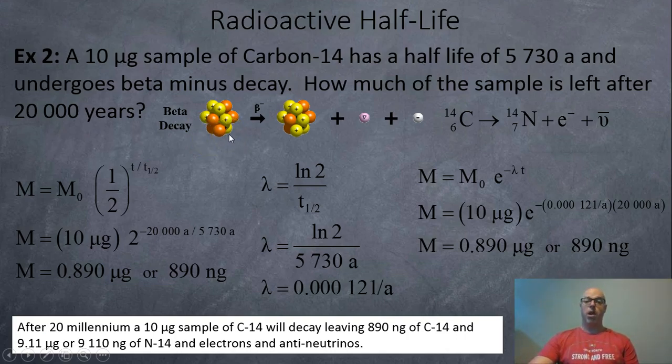So in this case here, how much is left after 20,000 years or 20 millennium? So you now have the parent carbon-14, it's going to turn into some nitrogen-14. So what happens is one of the neutrons turns into a proton and we're going to get an anti-neutrino, a little piece of anti-matter, and an electron.